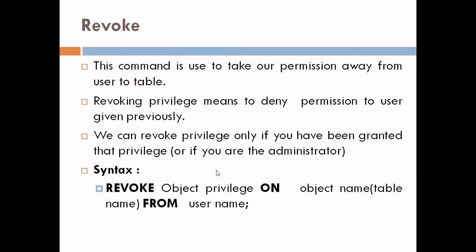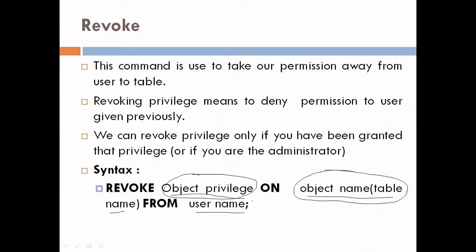Here is the syntax of the REVOKE command: REVOKE [object_privilege] ON [object_name] FROM [user_name]. Here object_name is the table name. We write the privileges we want to take away at object_privilege, the table name, and then the user name.